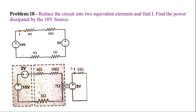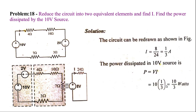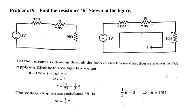From the simplified circuit, find the current using V = IR, so I = V/R = 8/24 = 1/3 ampere. They asked for the power dissipated by the 10-volt source. Power P = V × I = 10 × (1/3) = 10/3 watts.